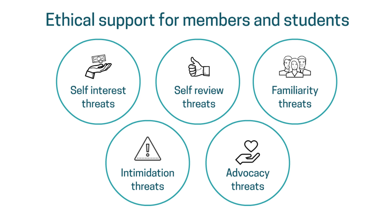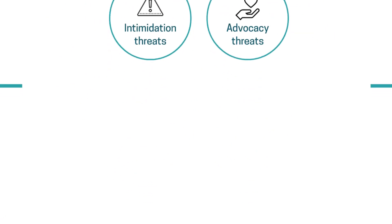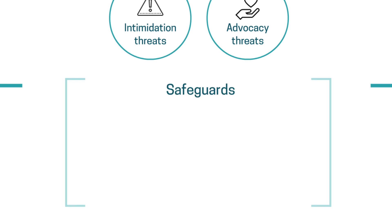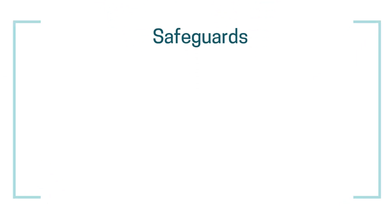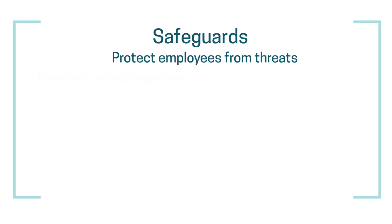There are a range of threats that may impact upon an individual acting ethically. CIMA has outlined a number of potential safeguards to these threats which can be used by a business to protect its employees. The first is establishing ethical and conduct programs — having up-to-date and meaningful programs and information available to members that give guidance and advice on ethical issues. This can be in the form of courses, talks, or online information, for example.